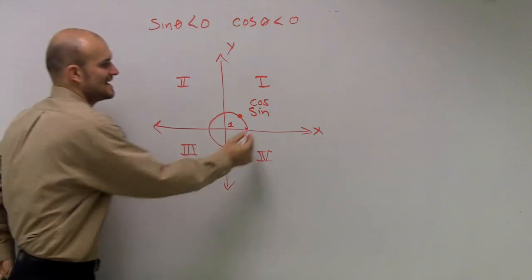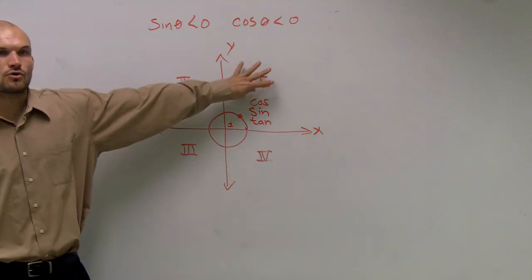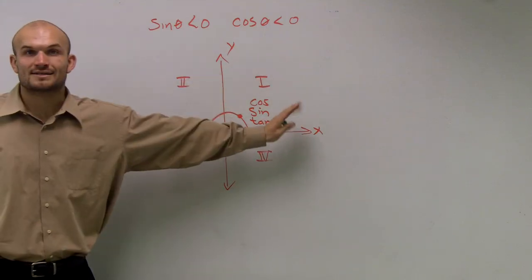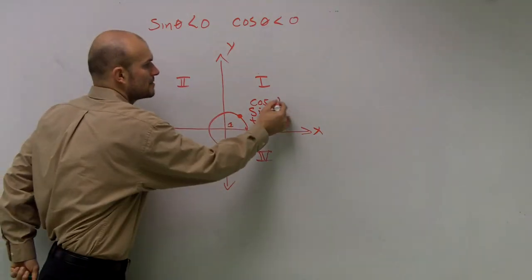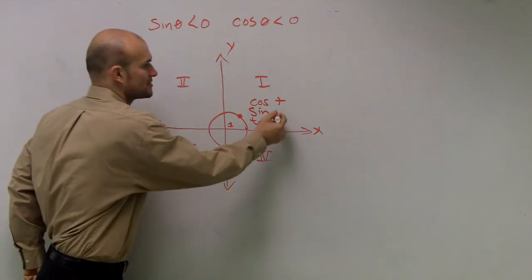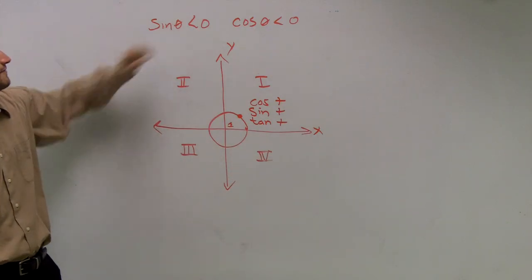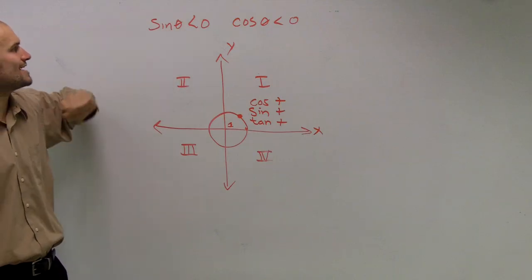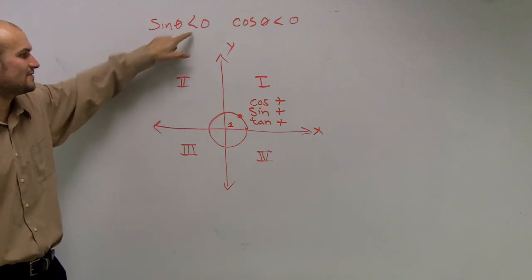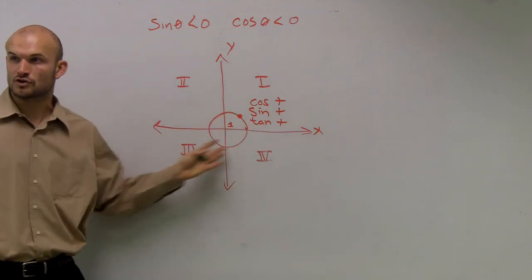So, and then the tangent was y over x. So, if we look in this first quadrant, if I go to the right, that means my x values are positive. The sine values, since it's above the x-axis, are also going to be positive. Therefore, my tangent is also going to be positive. So therefore, what they're asking is, well, what quadrant is it going to be when sine is negative? So that means sine is negative in the third and the fourth quadrant.